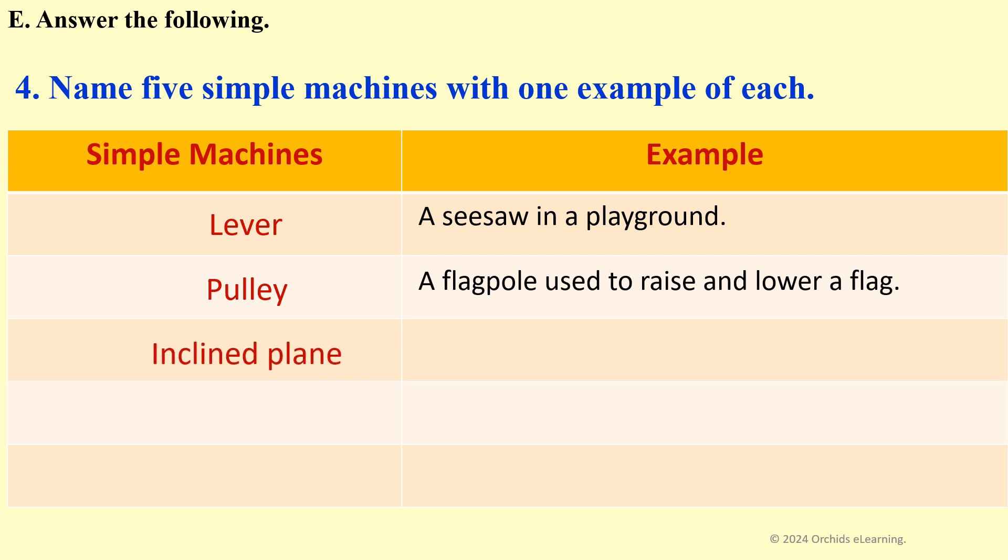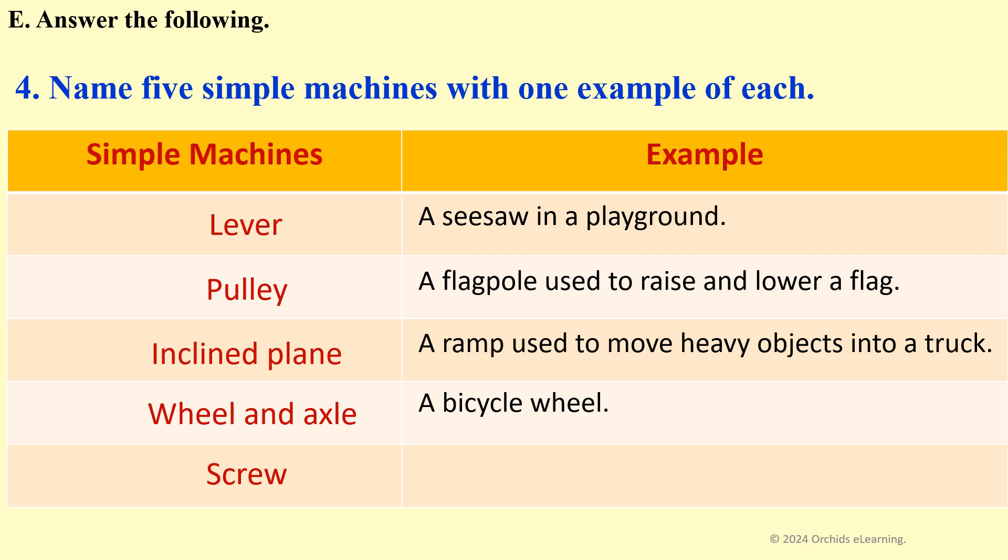Inclined plane: A ramp used to move heavy objects into a truck. Wheel and axle: A bicycle wheel. Screw: A jar lid that twists on and off.